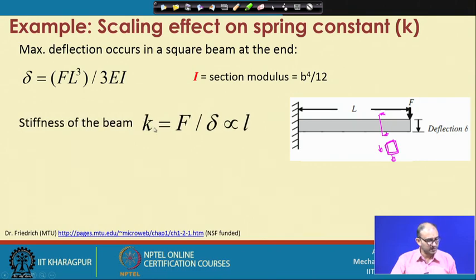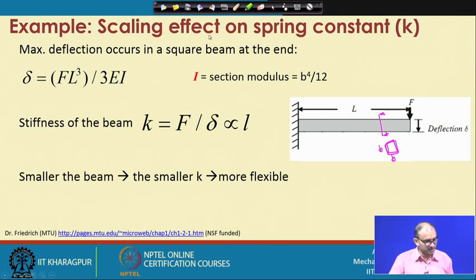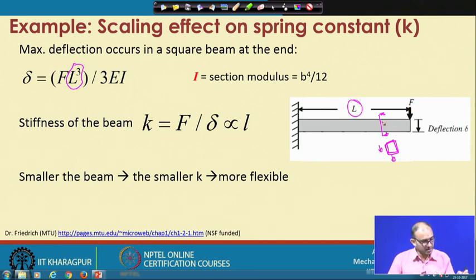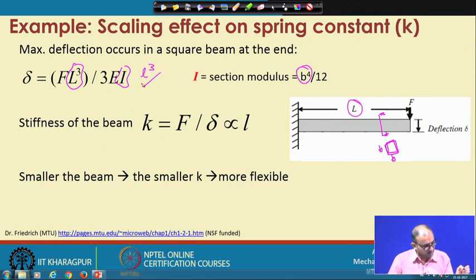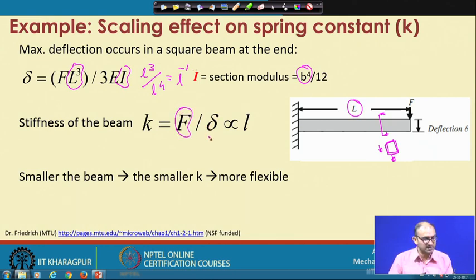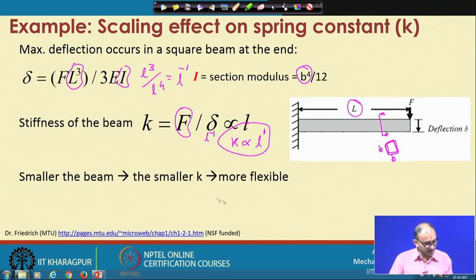Stiffness of the beam is given by K = F/δ. Using the deflection equation, and noting that L³ appears in the numerator and I = B⁴ in the denominator, this gives δ proportional to L³/L⁴ = L⁻¹. Since K = F/δ, with δ in the denominator, K is proportional to L¹. So the smaller the beam, the smaller the K value and the more flexible it is. This is the advantage of going down in dimensional scale.